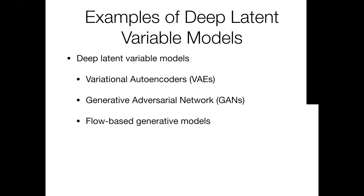In this lecture, we will focus on deep latent variable models that can bridge probabilistic graphical models and deep neural networks. There are mainly three categories: variational autoencoders, which we will focus on today; generative adversarial networks, which you just learned in the last lecture; and flow-based generative models, which learn a bijection mapping between a simple prior distribution and the complex data distribution, though we will not cover this topic today.